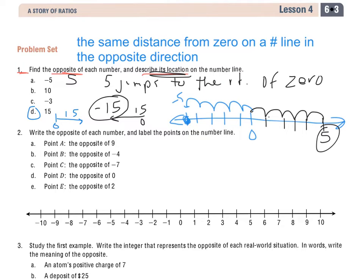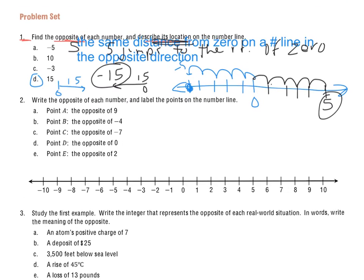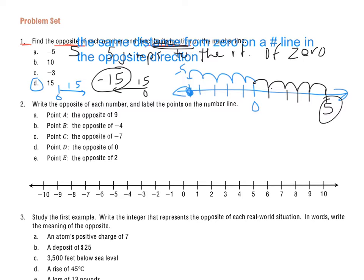So let's take a look now at another question. A couple parts here that we're going to look at in 2. Write the opposite number of each and label the points on a number line. So we've got the number line down below. I'm going to do A, point A, the opposite of 9. If I look on my number line, I can find 9 right there.